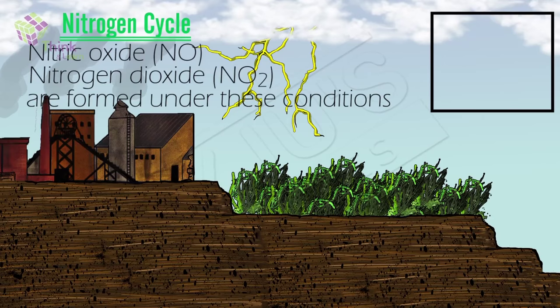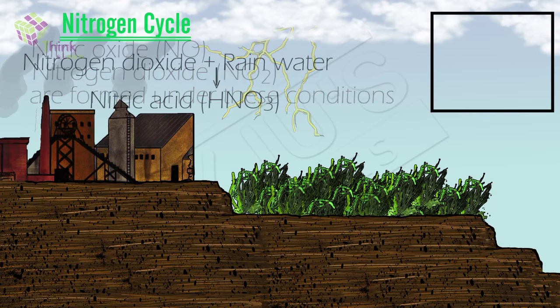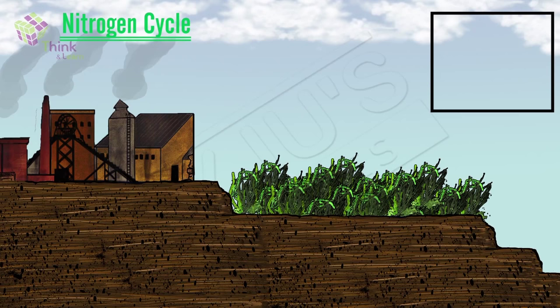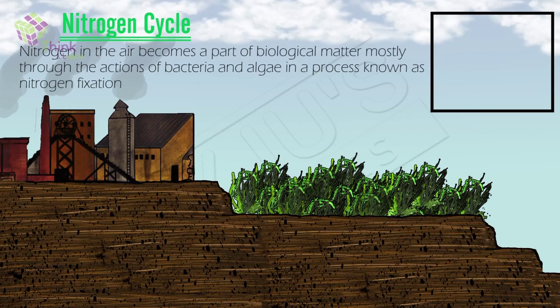Eventually, nitrogen dioxide may react with water in the rain to form nitric acid. The nitrates thus formed may be utilized by plants as nutrients. The nitrogen in the air becomes a part of the biological matter, mostly through the action of bacteria and algae in a process known as nitrogen fixation.